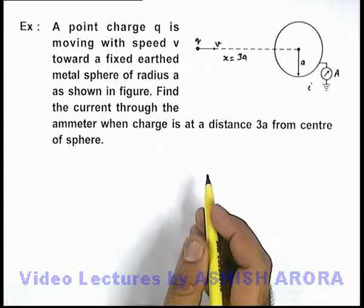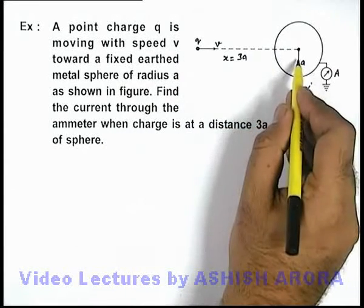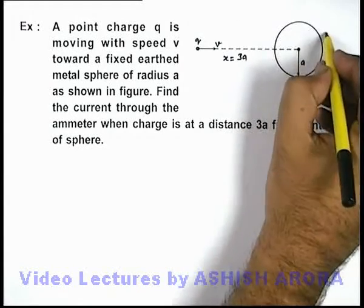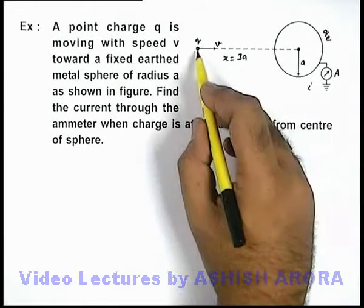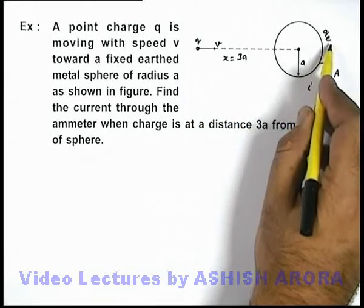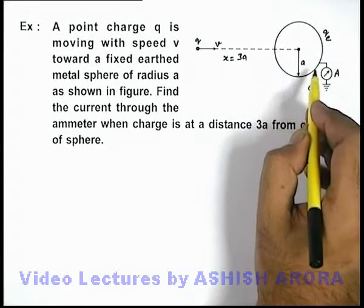Now in this situation we know well that due to this charge q there will be some potential of the sphere, and as it is connected to earth, earth will supply a charge qe onto it. As the charge is getting close, the magnitude of qe will continuously change to keep the potential of sphere at zero.